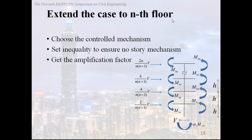Extend the case to N's floor. We sum up the steps to find the amplification alpha in different floor. So here are some steps. Step one is choose the controlled mechanism. We use the direct moment equilibrium to get the best shear V. We set the inequality to ensure no story mechanism. We hope that no plastic hinge occurs at both ends of columns. And step three, finally we will get the amplification factor alpha.